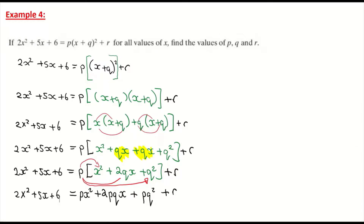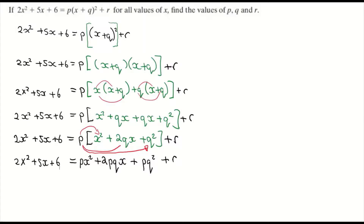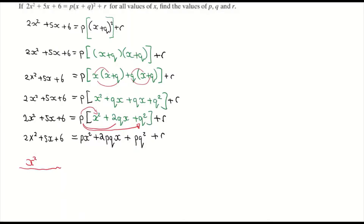That was a bit of work to reach that step. Now I'll rearrange the right hand side — the left hand side goes squared term first, then degree one, then the constant. The right hand side is already in order: px², then 2pqx, then the constant pq² + r. Note that pq² has no x associated with it, so it is a constant — don't rearrange it to join the x² term. Now I'm going to solve for p, q, and r.